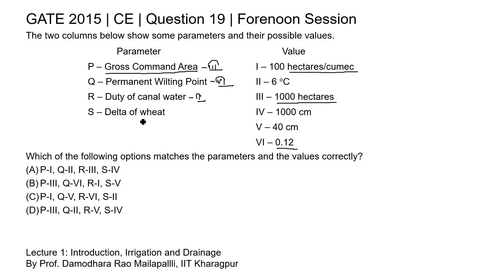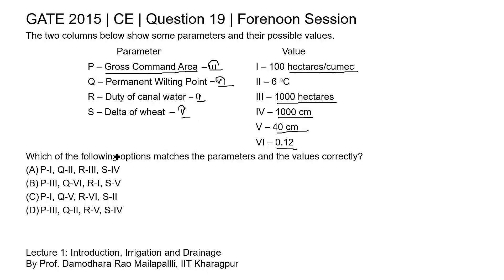Now for delta of wheat. Delta is the amount of water required for the crop during the cropping period, defined in terms of depth. Looking at options 4 and 5, the values are 1000 centimeters and 40 centimeters. Delta of wheat is 40 centimeters — 1000 centimeters would be 10 meters, which is an unreasonably high amount of water for wheat. So the correct match for S (delta of wheat) is 5.